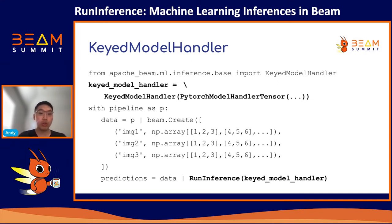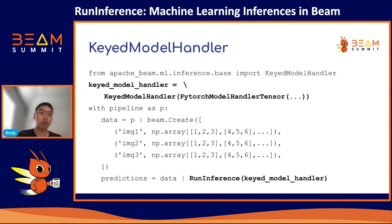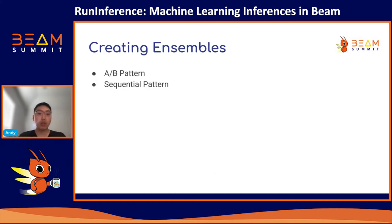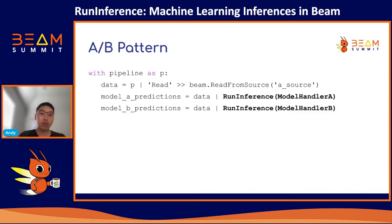If you have a key attached to your examples, which is a typical pattern in Beam pipelines, wrap your handler using something called the KeyModelHandler around the base model handler object. As you can see, we import KeyModelHandler and wrap it around PytorchModelHandlerTensor. With this knowledge, you can start constructing more complicated pipelines, building ensembles that utilize different patterns like the A/B pattern or sequential pattern. For the A/B pattern, you can create a branch in your pipeline by applying different models to the same input PCollection — perfect for A/B testing.